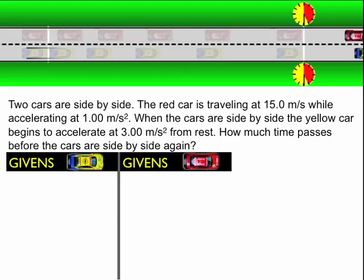Every time you have an acceleration, you need a list of givens. In this case, I have two different accelerations, so I'm going to have two lists of givens. It doesn't matter if the accelerations are one object accelerating at two different rates, or two objects with two different accelerations. Every time you have an acceleration, you have a list of givens.